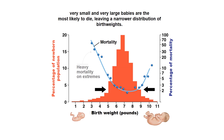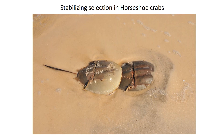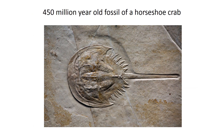In nature, we also have stabilizing selection on animals like horseshoe crabs, one of my favorite organisms. This is a pair coming up to nest in North Florida, and they have looked like this for almost 450 million years. When we see fossils of these guys, they have barely changed. That's some nice stabilizing selection in nature.